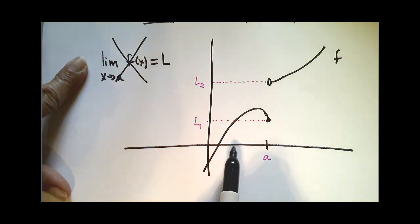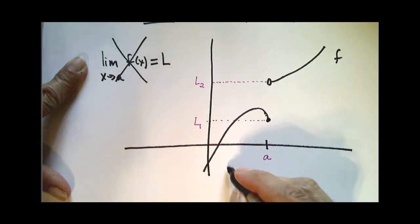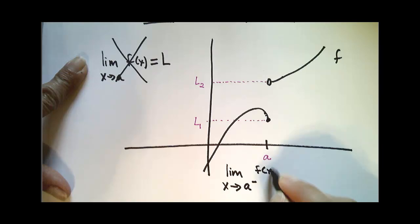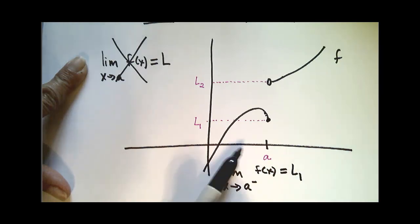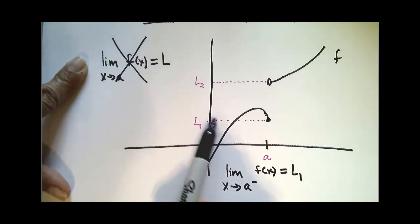So what we mean here is the limit as x approaches a from the left. The notation we would use is limit as x approaches a minus of f(x), so we put a little minus sign in the right corner of a. In this case, it equals L1, because as I get close to a from the left, my y values get closer and closer to L1.